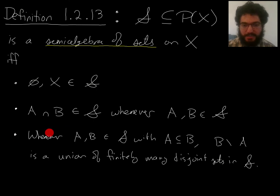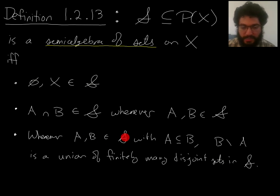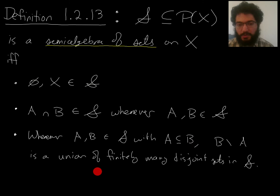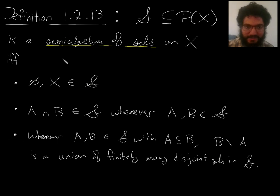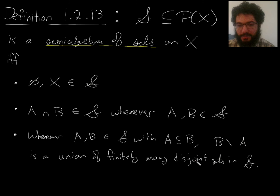But this third bullet point is where things get interesting. We're not assuming closure under complements, but we are assuming some kind of good behavior: that if you take any two sets A and B in the semi-algebra S, with A contained in B, then when you delete A from B, you get not necessarily something in S, but a union of finitely many disjoint things in S. That's the key difference — the word 'semi' comes from this weakened condition, where the complement is a union of finitely many disjoint elements of S.